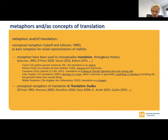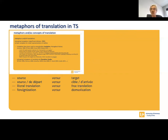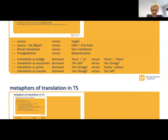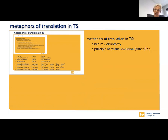However, it's important to say that no metaphor is innocent, because it always conceives and presents translation in a certain way. So let us first look into that. What are the conceptual implications of some of the more common metaphors of translation in translation studies? There are many metaphors in translation studies, for instance, source and target, source et cible, literal versus free translation, foreignization versus domestication — that's Fenouti — or also translation as a bridge, an encounter, a prison, or a transfer between here and there, between the foreign and the self. Arguably, such metaphors share some common conceptual features. First, they are binary or dichotomic in the way in which translation is presented — there is a versus or a between involved in each of them. As a result, the underlying principle is that of exclusion, of either-or reasoning.